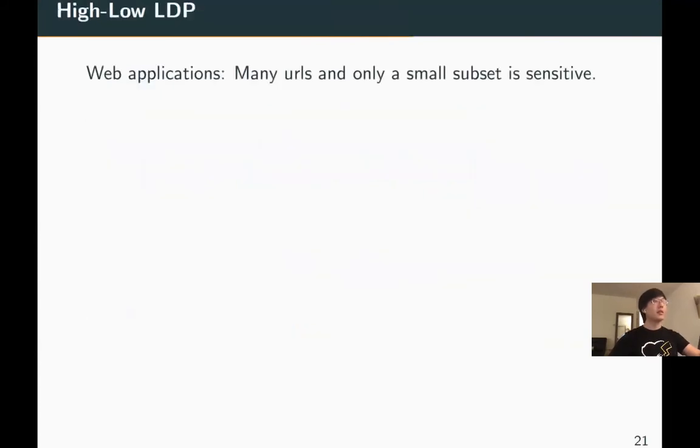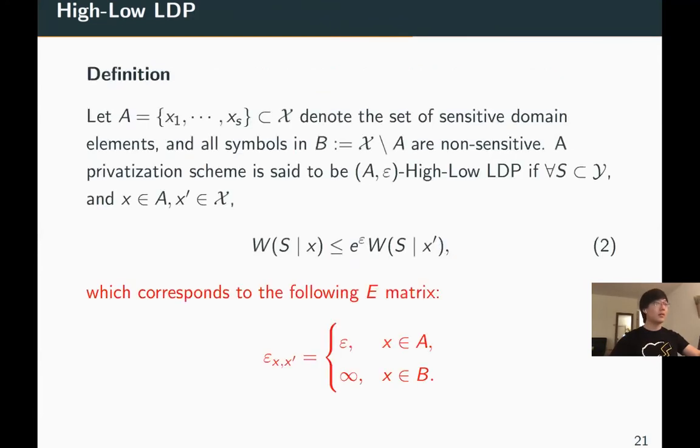For k-ary alphabet, motivated by web applications where there are many URLs but only a small subset is sensitive, we propose high-low LDP. There is a small subset of sensitive domain elements in set S. A scheme is said to be (A, epsilon)-High-Low LDP when for all subsets S of the output alphabet, the ratio between the probability of outputting S given a sensitive element and the probability of outputting S given any other elements is bounded by e to the epsilon. The definition corresponds to the following E matrix and only protects the identity of sensitive elements.